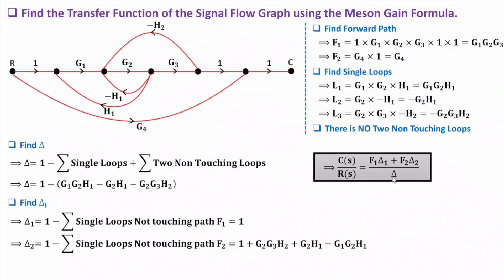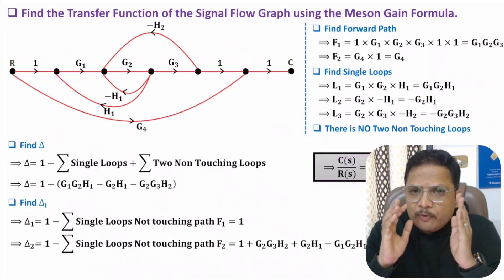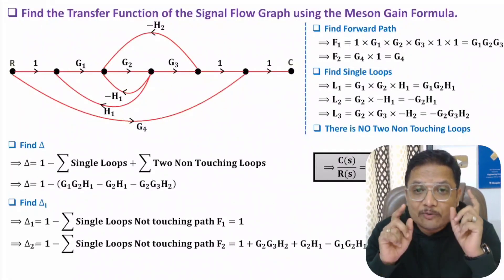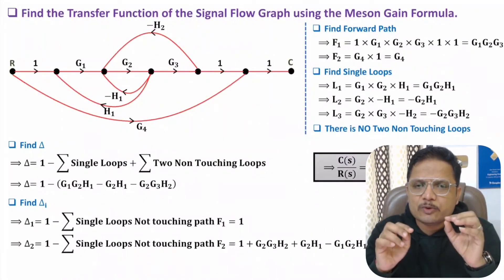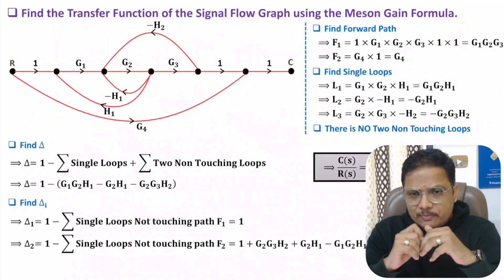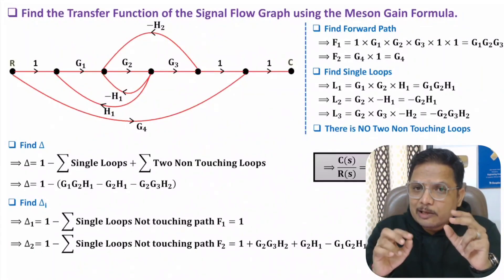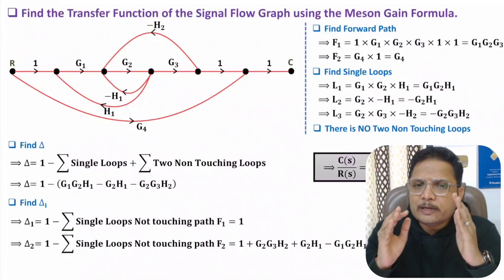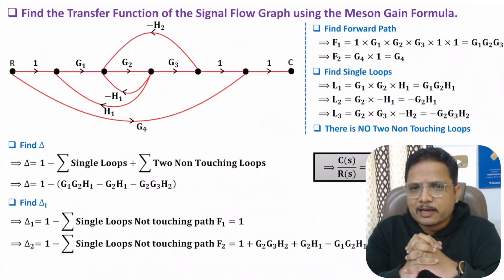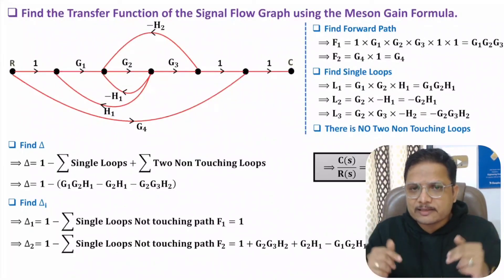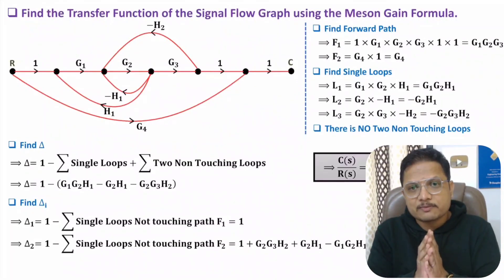This is how we can simply solve questions based on signal flow graph using Mason's gain formula. You need to focus on the diagram — don't forget any single loop or two non-touching loops. Students may get confused in identification of single loops and non-touching loops, so be careful when solving problems. With practice, your accuracy will definitely improve. Thank you so much for watching this video.